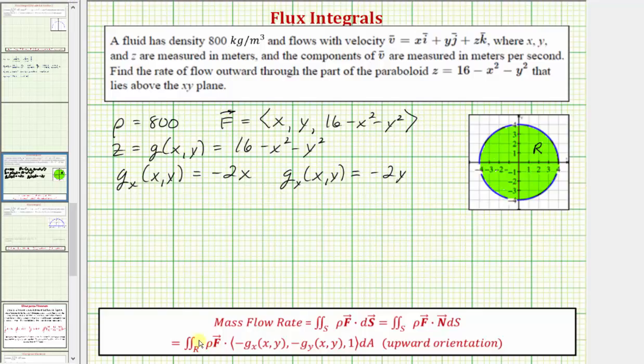The flow rate is equal to the double integral over the region R of rho, which is 800, times this dot product. F of x comma y has an x component of x, a y component of y, and a z component of 16 minus x squared minus y squared, dotted with 2x comma 2y comma 1, the opposite of the partial derivatives and 1 for the z component.